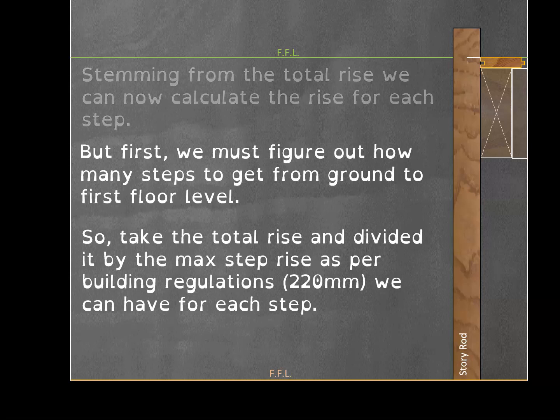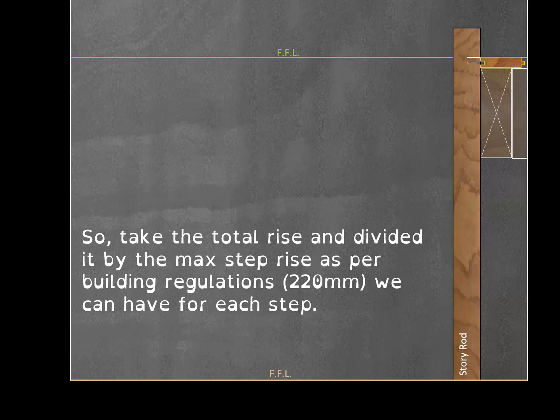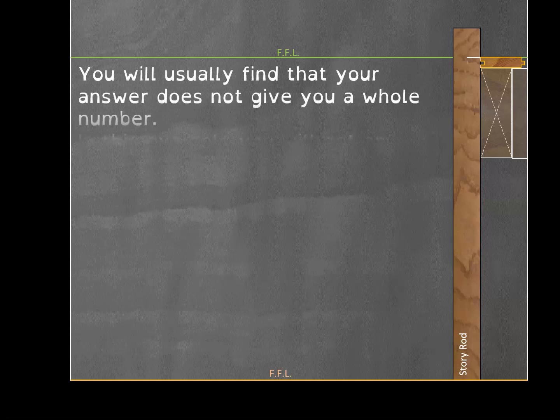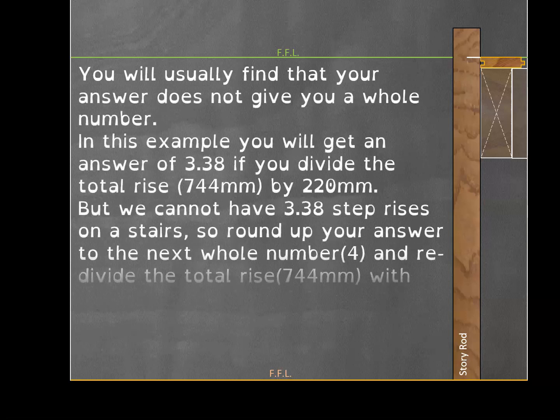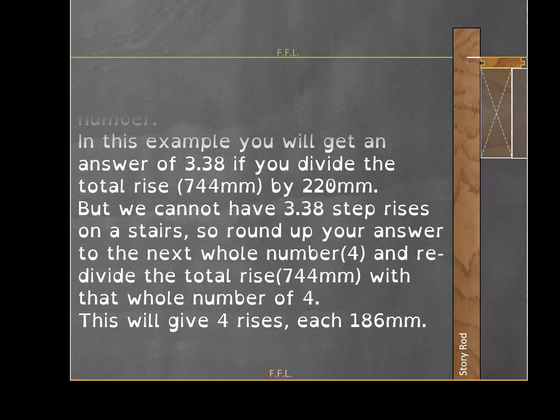When you divide, you're not going to come out with an even figure unless you're extremely lucky. Whatever answer you get, round up to the next whole number. In our case it's going to be three point something steps, but we can't have three steps on one side and one smaller, so we round up to the next whole number. Our answer was 3.38, so we round that up to 4 and redivide the total height, giving us four even step rises, each being 186 millimeters.